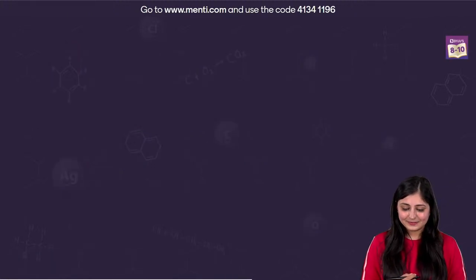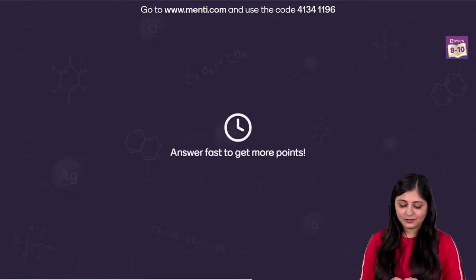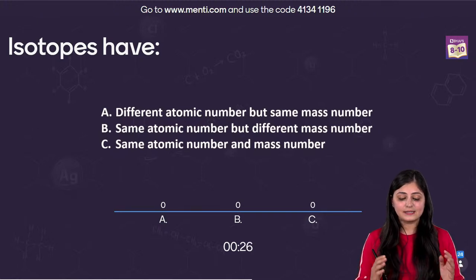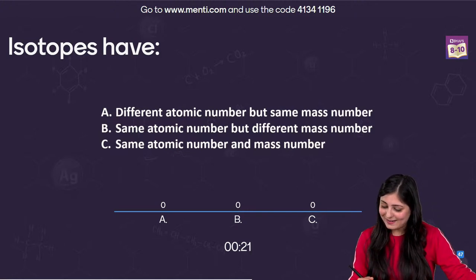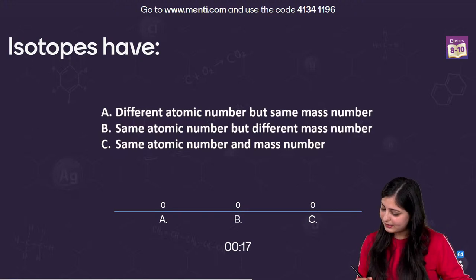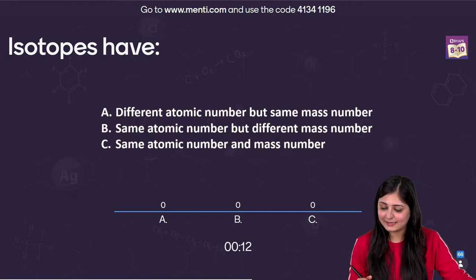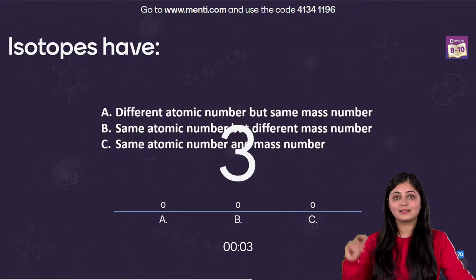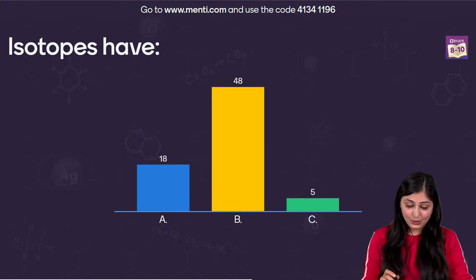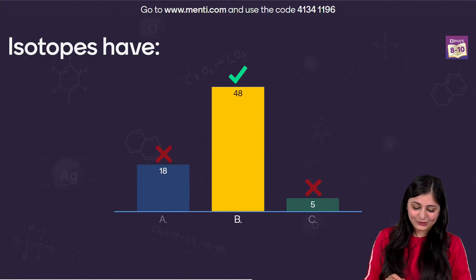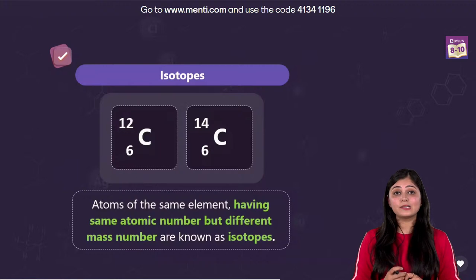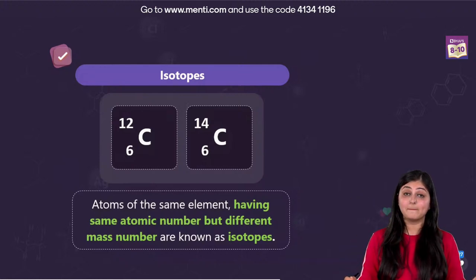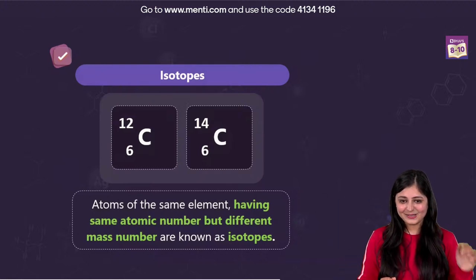Question number 5: isotopes have — A) different atomic number but same mass number, B) same atomic number but different mass number, C) same atomic number and mass number. Everyone in the chat is going with the same option. Most of you got it right. When we talk about isotopes, as seen with carbon-12 and carbon-14: atoms of the same element having the same atomic number (6) but different mass numbers (12 and 14). So isotopes have same atomic number but different mass number.